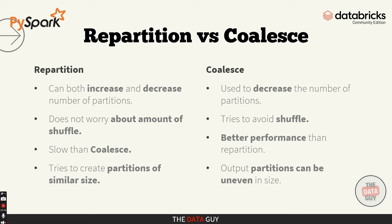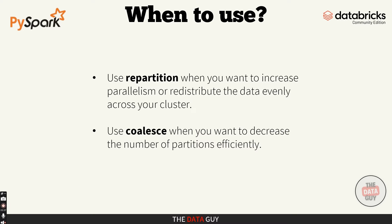So when should you use each? Use repartition when you want to increase parallelism or redistribute data evenly across your cluster — usually before an expensive operation like a join or large aggregation. Use coalesce when you want to decrease the number of partitions efficiently, like when you're preparing to write results to a file or reducing the workload after a transformation.